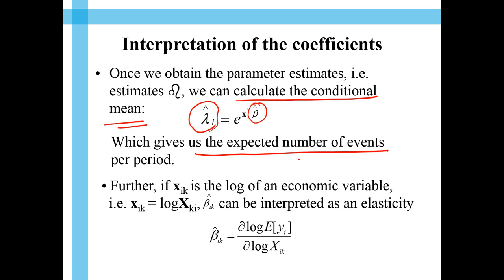Which gives us the expected number of events per period. Because, all we are interested in is lambda, which represents how many number of events one would expect in a given period.